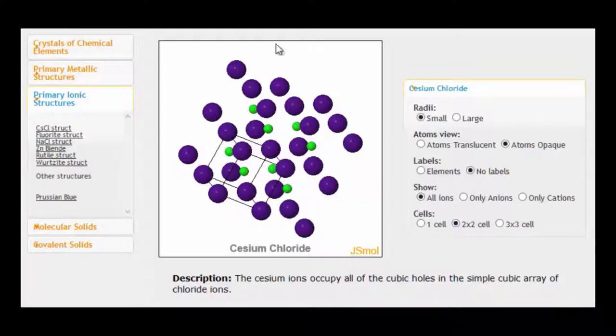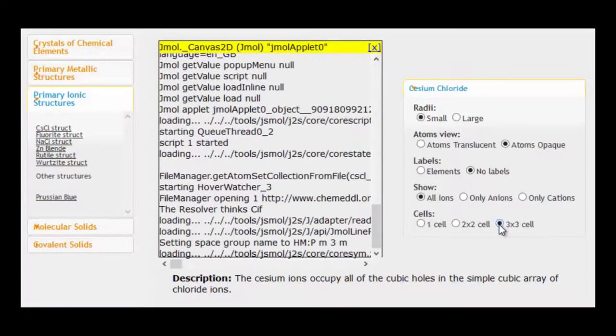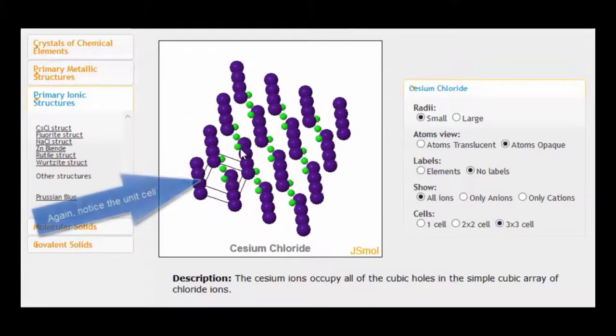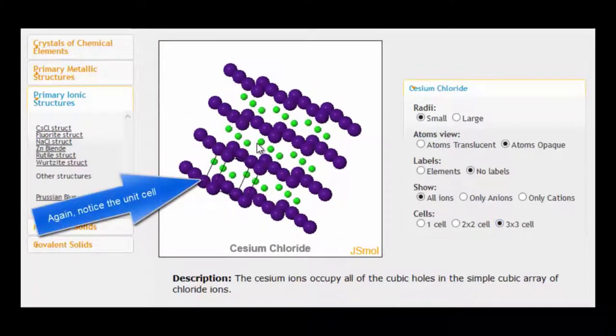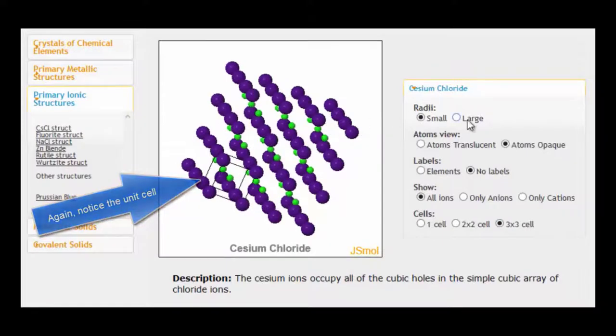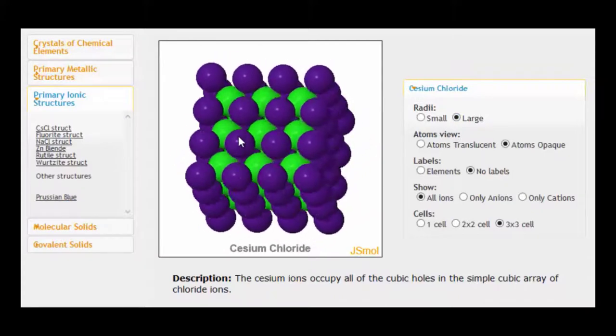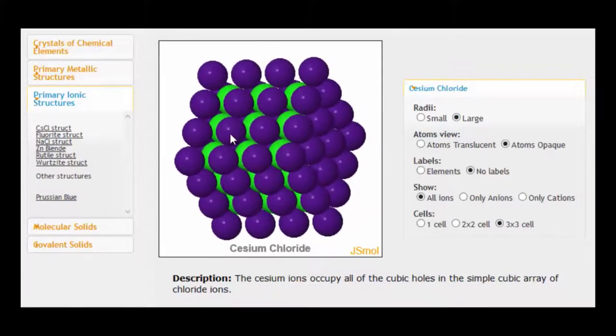And then we can redraw it again for three by three by three, which looks like this. Now, at the moment, I've got the ions small. I can make them large, which gives you a better idea perhaps of how they pack together. And you can see that we can essentially keep adding on unit cells to this structure to make the cesium chloride crystal as big as we like. So the only thing that determines the size of the lattice is how many ions we've got available.